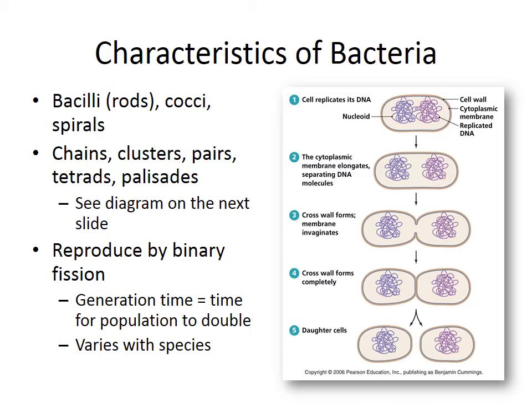Characteristics of bacteria: there are two main shapes. There are rods, called bacilli — a single rod would be a bacillus — and then cocci, which are the little round ones, and spirals. You might be familiar with a couple of spiral bacteria; leptospirosis, for instance, is a spiral-shaped bacterium. Bacteria can come in chains, clusters, pairs, tetrads, and palisades.